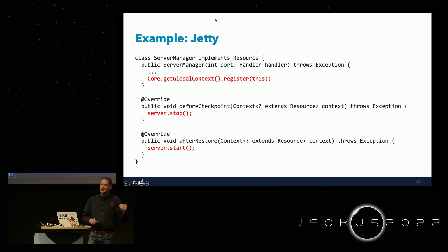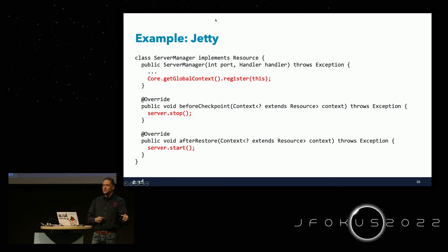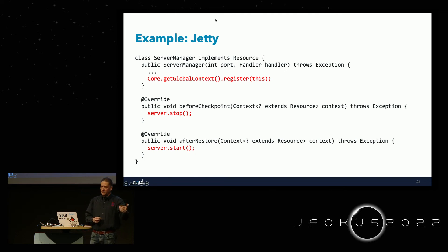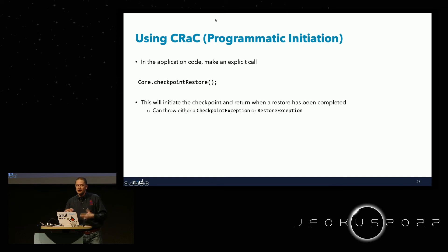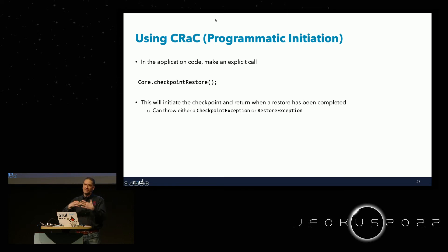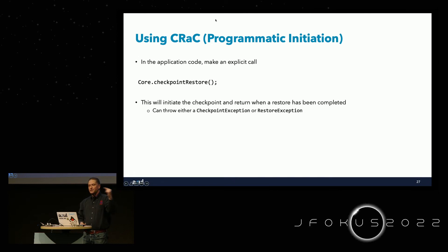To fix this, our ServerManager implements the Resource interface, giving us beforeCheckpoint() and afterRestore() methods. In beforeCheckpoint(), we stop the Jetty server; in afterRestore(), we start it again. When creating a new instance, we get the global context and register this object with it so those methods get called. It's a very simple, straightforward API. If you want to initiate the checkpoint programmatically, you can call Core.checkpointRestore() within your own code — execution pauses at that point, and when restored, continues from there. It can throw CheckpointException or RestoreException if issues occur.